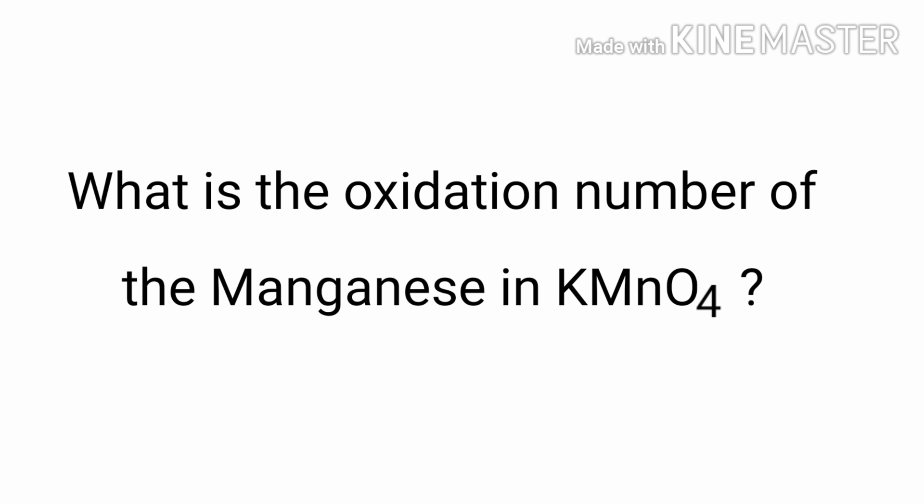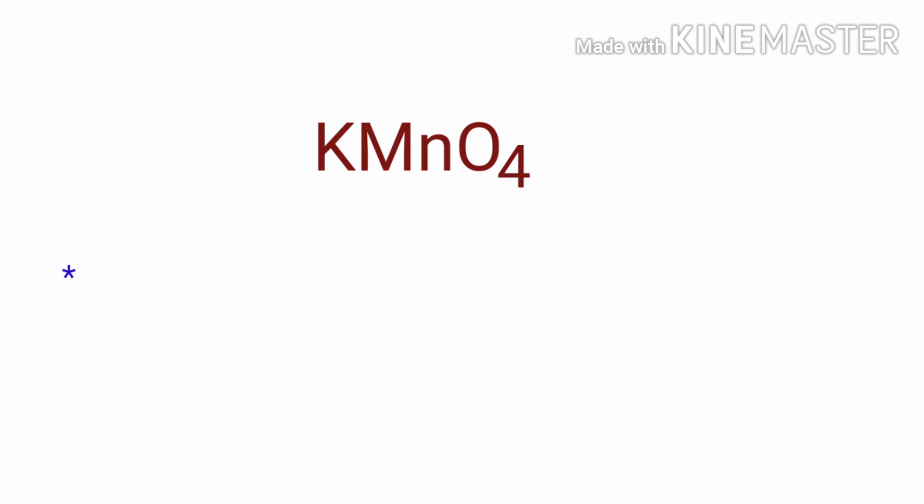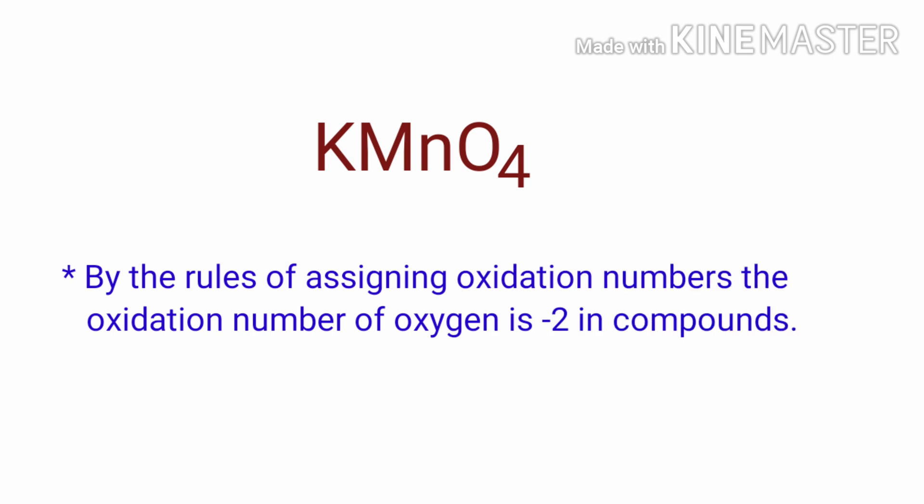What is the oxidation number of manganese in potassium permanganate? We can use the oxidation number rules to determine oxidation numbers. By the rules of assigning oxidation numbers, the oxidation number of oxygen is –2 in compounds.